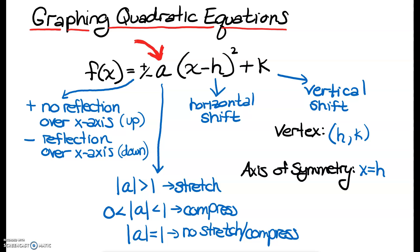What does the 'a' do? If you take the absolute value of a and it is greater than 1, our graph is being stretched — making the graph tall and skinny. If the absolute value of a is between 0 and 1, then we're compressing it, making it short and fat. If the absolute value of a equals 1, there is no stretch or compress. So we're going to be looking for that stretch and compress factor in this video.